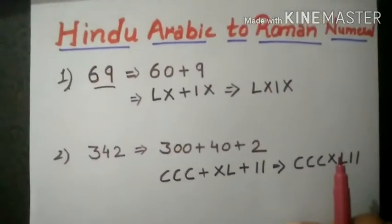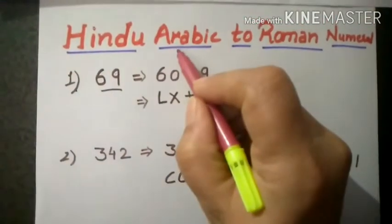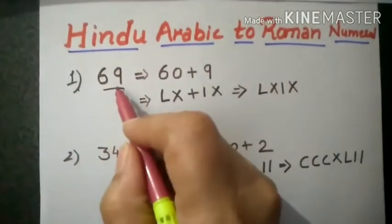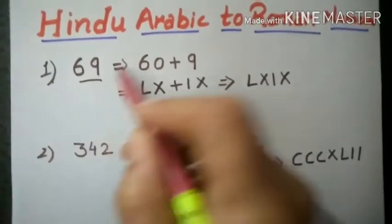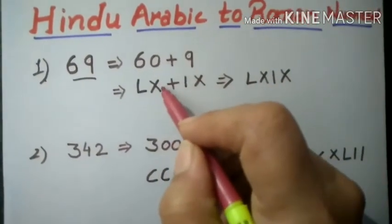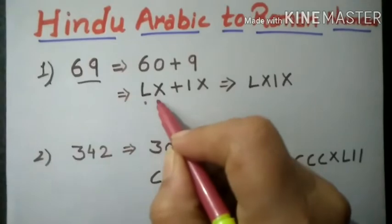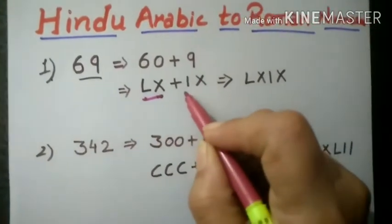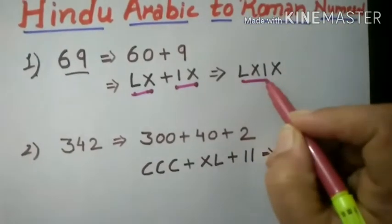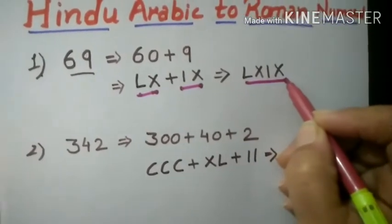Students, now I will tell you how you can convert Hindu Arabic number to Roman numeral. First I will take an example, 69. You have to expand this as 60 plus 9. Now, how you can write 60? L X. Then 9 is I X. Then you have to add it, which means L X I X. This is 69.